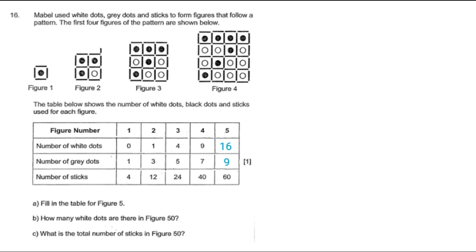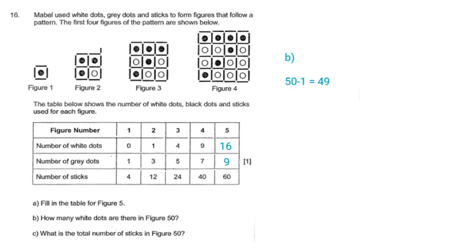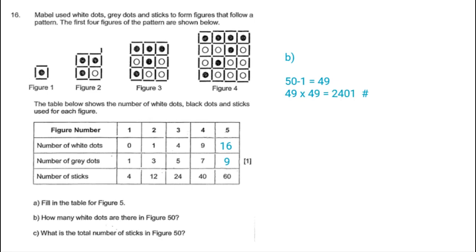Part B of the question is: how many white dots are there in figure 50? We talked about the white dots following the square number of one less than the figure number. So 50 minus 1 is 49, and 49 times 49 is 2,401. So the number of white dots for figure 50 is 2,401.